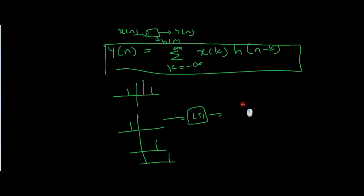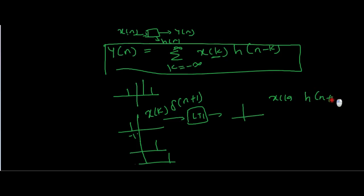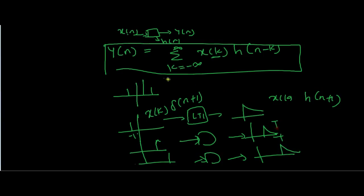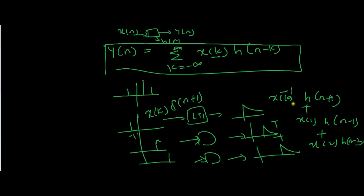We represent X(N) as a number of impulses — this is X(K). For example, at K equals minus 1 we represent it as X(K) times delta(N plus 1), so the output is X(K) times H(N plus 1). We apply the other impulses similarly and get their respective outputs. Adding all these outputs gives us Y(N), which equals X(minus 1) H(N plus 1) plus X(1) H(N minus 1) plus X(2) H(N minus 2) — and this matches the convolution summation formula. So this is the basic idea behind convolution.